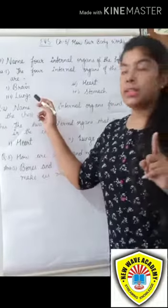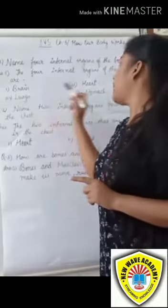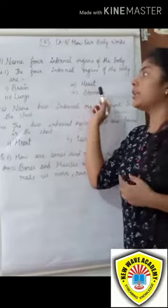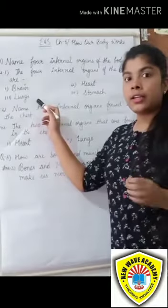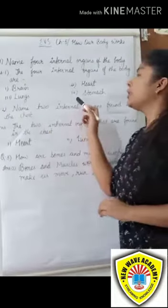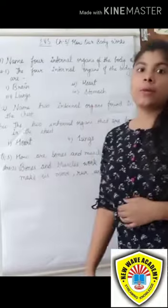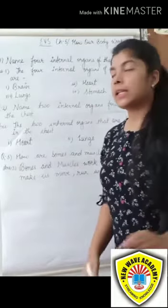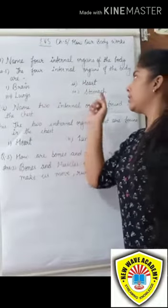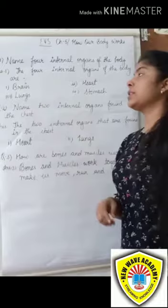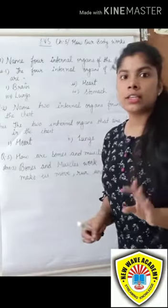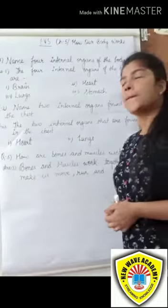The 4 internal organs of the body are: first is brain, second is heart, third is lungs, fourth is stomach. These are the 4 internal organs of our body.